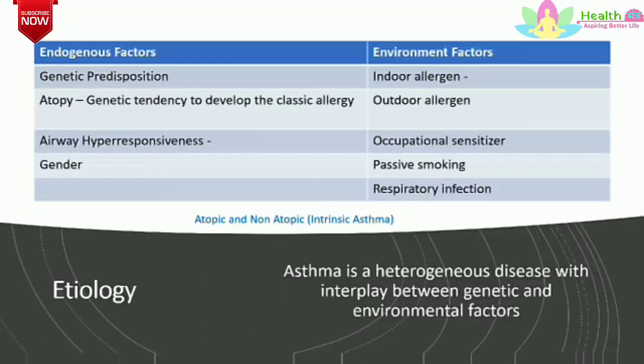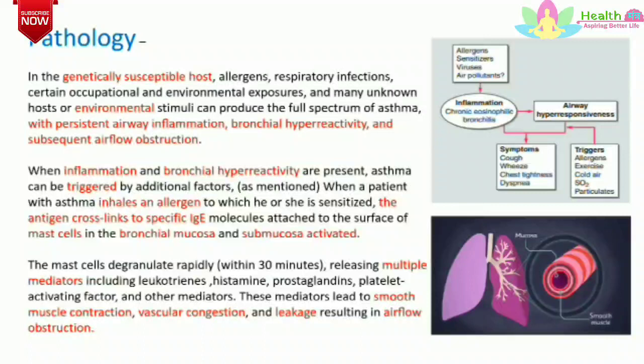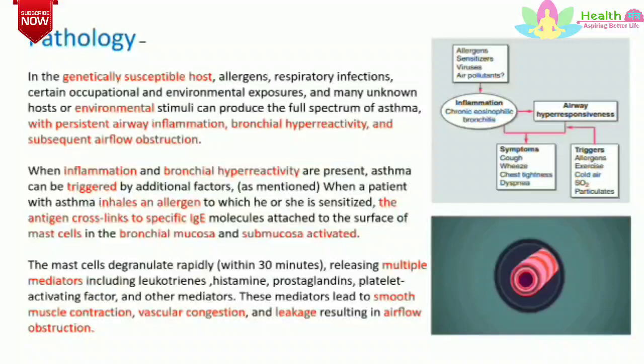The most common triggers for asthma are allergens, upper respiratory tract infection, exercise and hyperventilation, cold air, sulfur dioxide, drugs like beta blockers and aspirin, stress, and irritants like household sprays and paint fumes. The classical pathological findings for asthma are persistent airway inflammation, bronchial hyperactivity, and subsequent airflow obstruction.